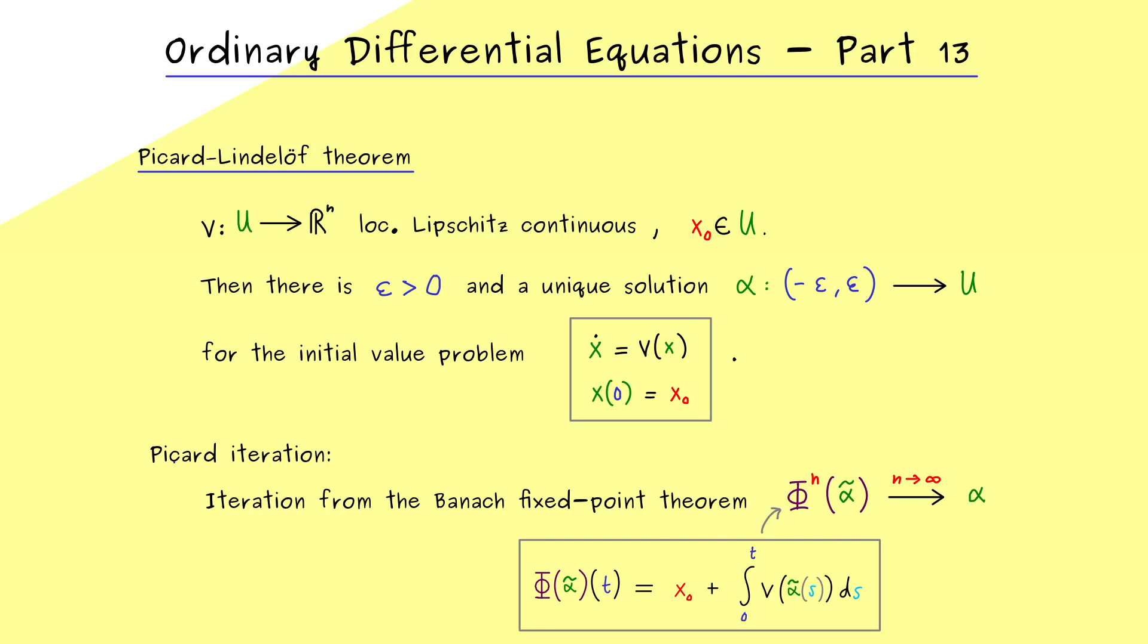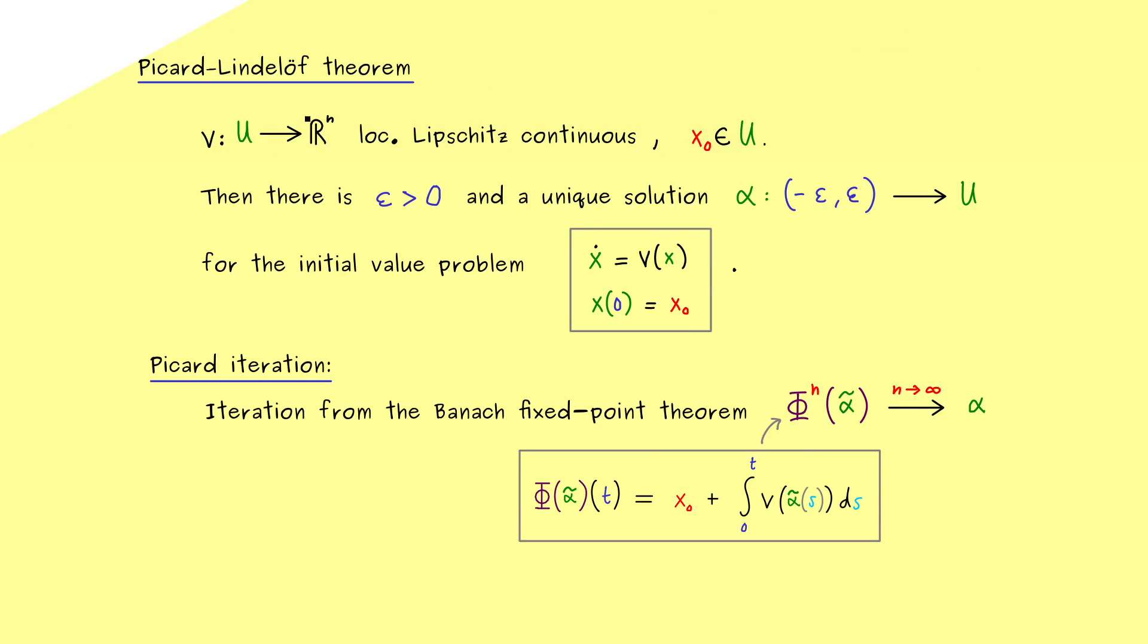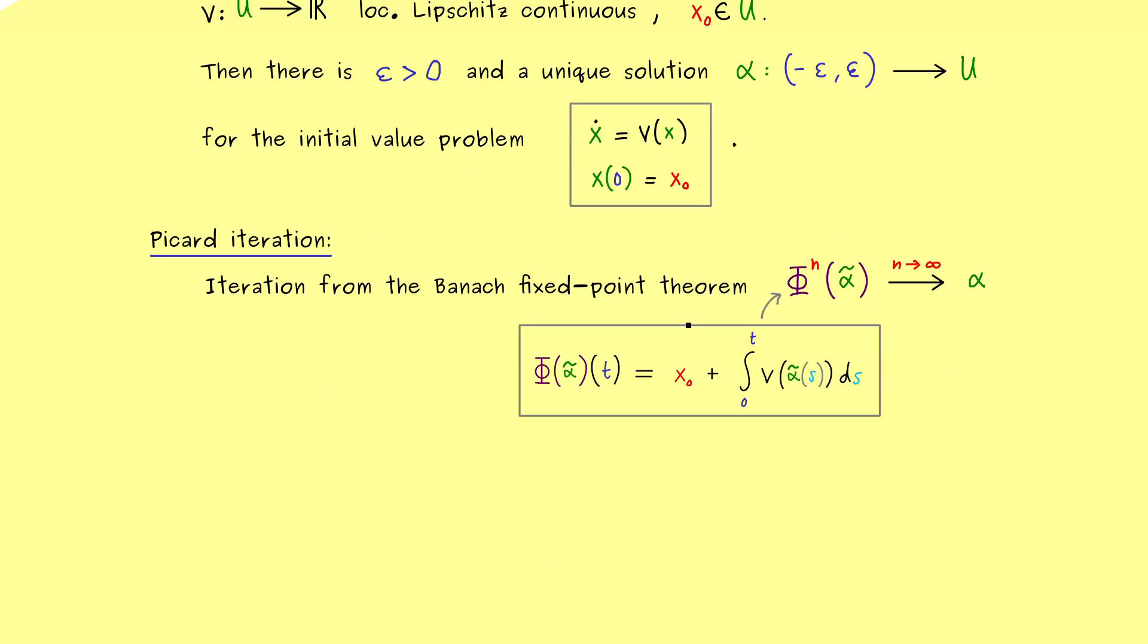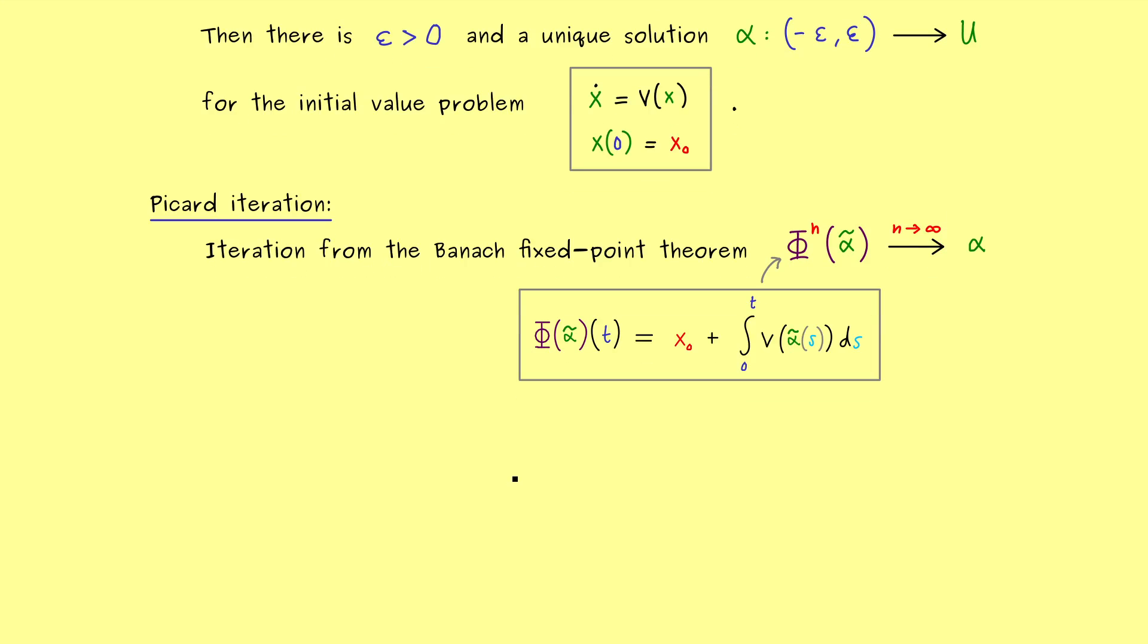And now I should tell you that this approximation process for a solution is often called the Picard iteration. And indeed you see it is not magic at all, because it immediately comes out of the proof from the Picard-Lindelöf theorem while we apply the Banach fixed point theorem. Therefore I would say it is very helpful to look at an example.